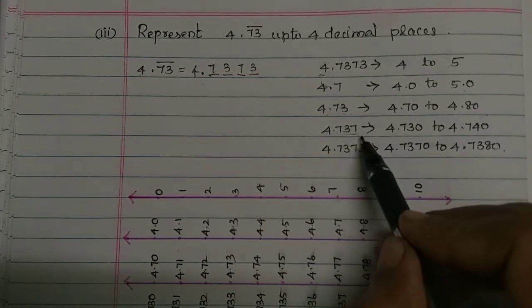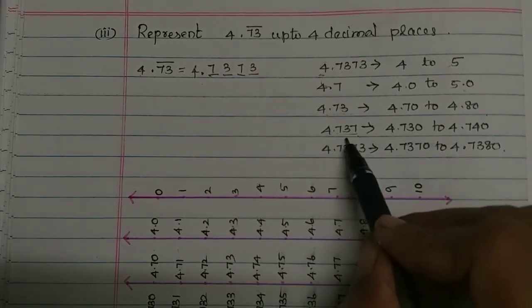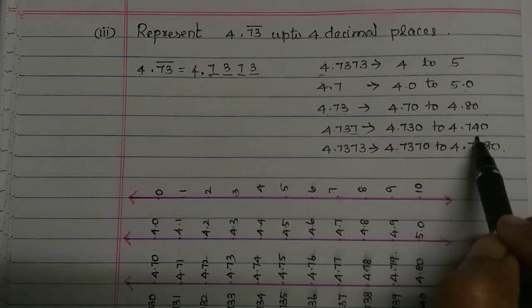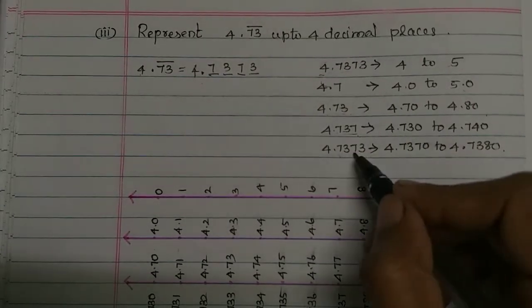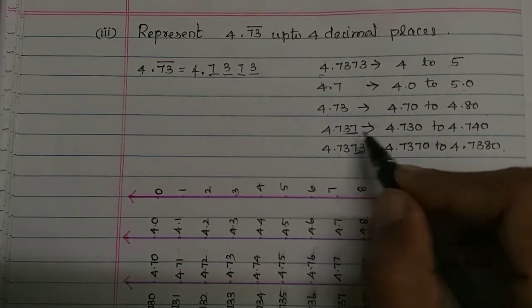4.737. So, in 37, 30, 40. So, 4.730 to 4.740. Then, the whole number is 4.7373. The last two digits. I will choose the number.